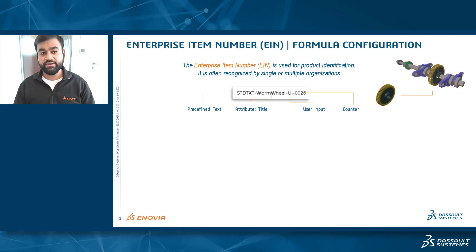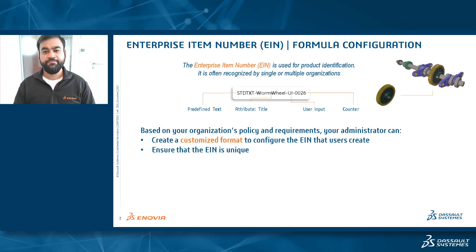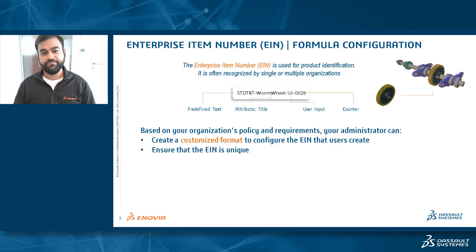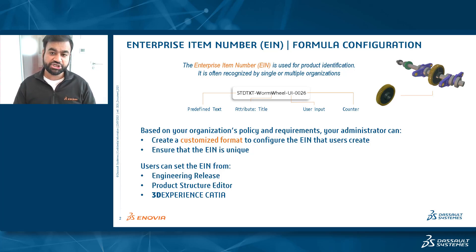Your administrator can use any combination of predefined text, attribute, user input, and counter to create a customized format for the EIN. The counter is often used to ensure the uniqueness of the EIN. Once the EIN formula is configured by the admin, users can set up the EIN for products through any of the apps mentioned in this slide. Now let's take a look at a demo video that explains EIN formula configuration and usage.